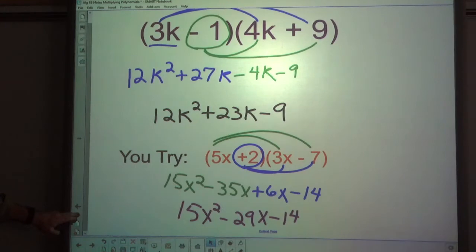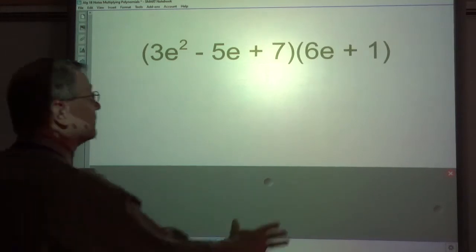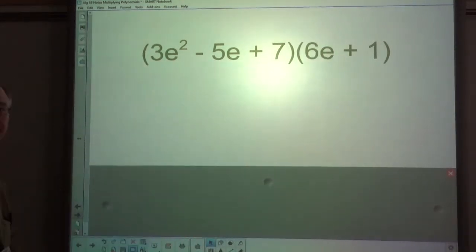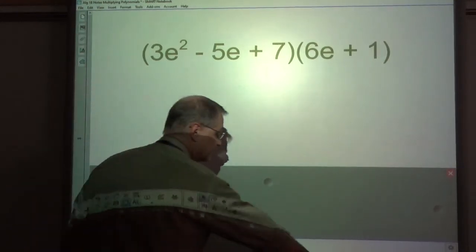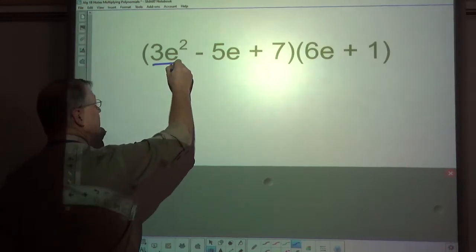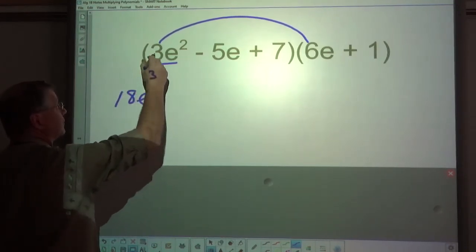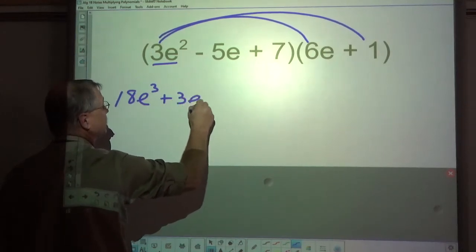Now the last type of example is when you have a binomial and a trinomial. Now it doesn't really matter whether the binomial comes first or second. And if you prefer it one way or the other, you can move it to the other side. But let's show what happens when we leave it as is. So I'm going to start, and this is why you don't want to just use FOIL, because sometimes you have a trinomial in there and maybe two trinomials. If I take 3e squared and I distribute it, I get 18e to the third plus 3e to the second.